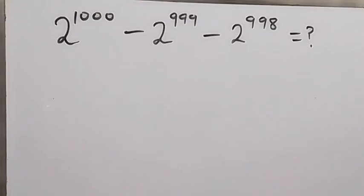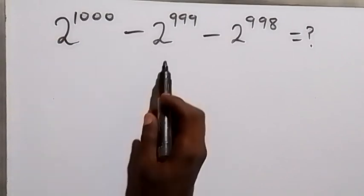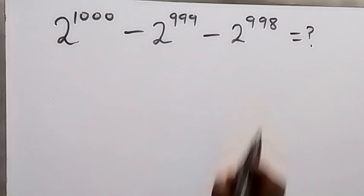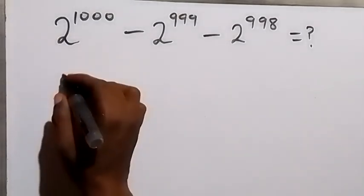Hello, you are welcome. Let's simplify this nice problem without a calculator. We have 2 raised to power 1000 minus 2 raised to power 999 then minus 2 raised to power 998. From here we can rewrite this as...